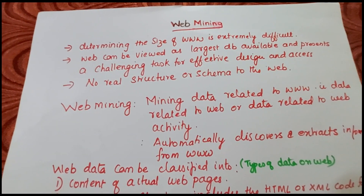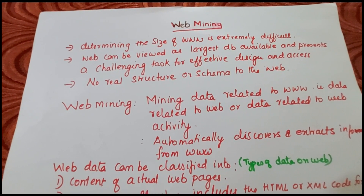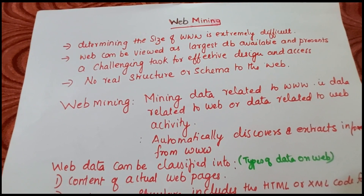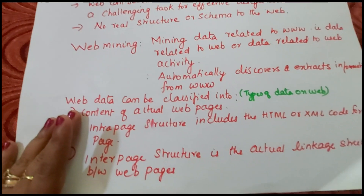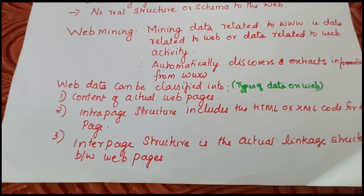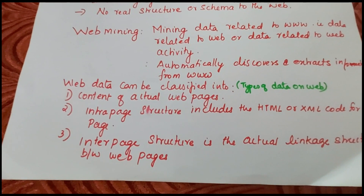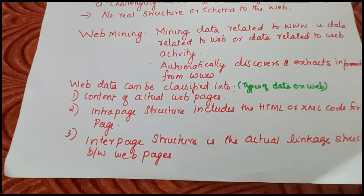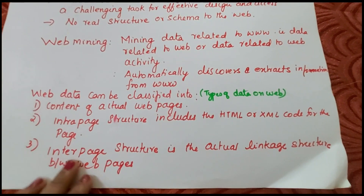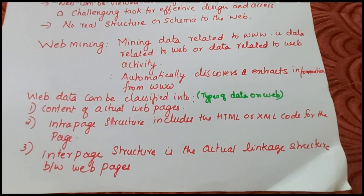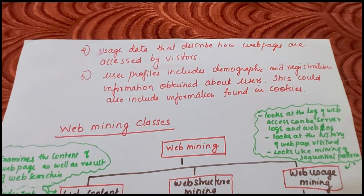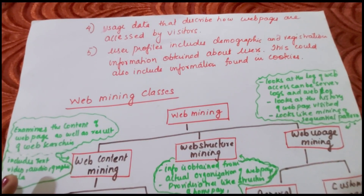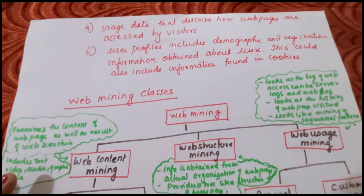Web mining is mining data related to the WWW — that is, data related to the web or web activity. It automatically discovers and extracts information from the worldwide web. Data on the web can be classified as: the content of the actual web page, intra-page structure including HTML or XML code, inter-page structure which is the link structure between pages, usage data describing how web pages are accessed by visitors, and user profiles including demographic and registration information, which could also include information found in cookies.